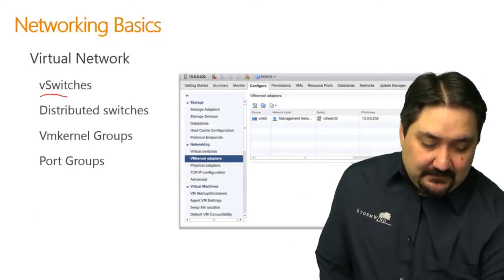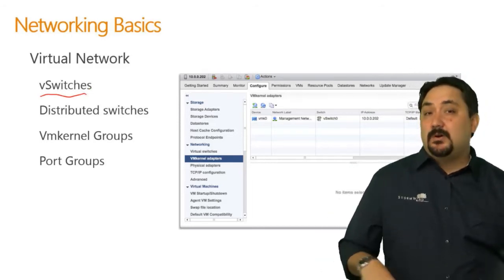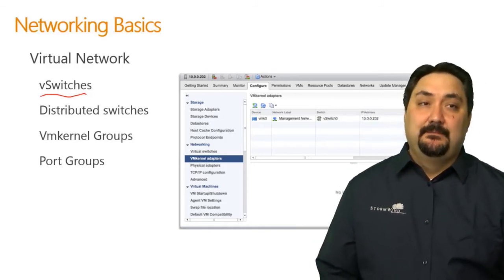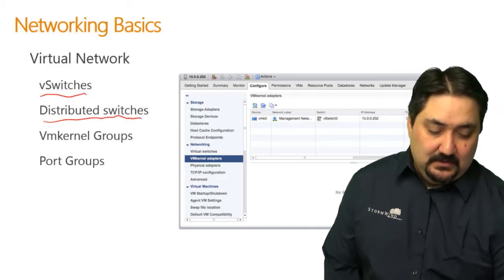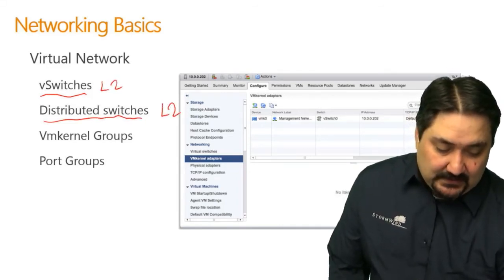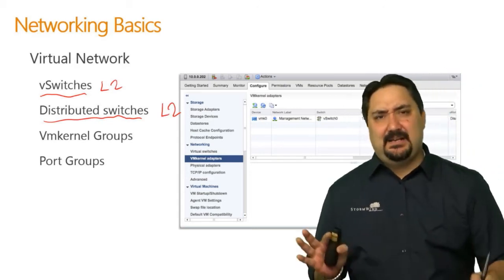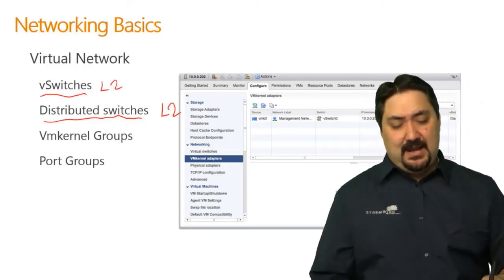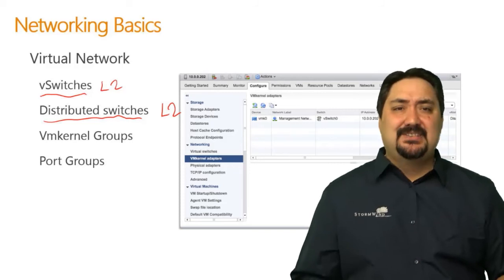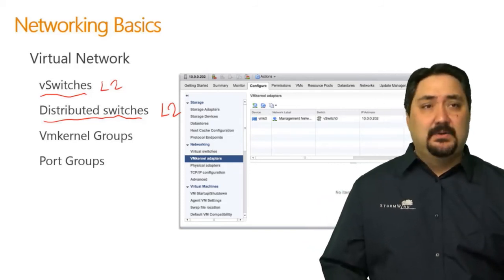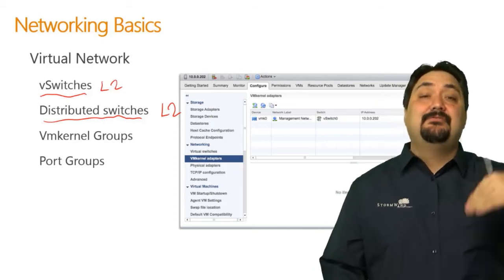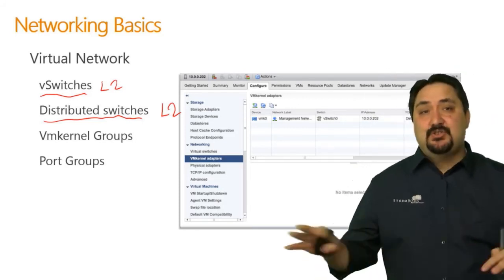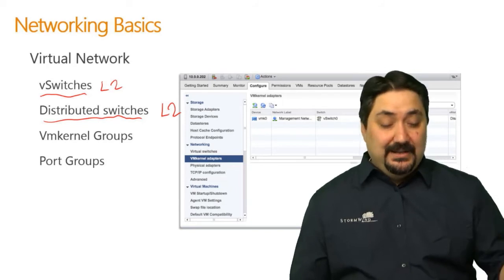Our virtual networking infrastructure starts with the basic vSwitch — the vSwitch is the workhorse of our virtual environments and allows connectivity to almost everything. We also have the distributed switch, which is also at layer 2. Someone described a distributed switch as a layer 3 switch — that is completely incorrect. It is a layer 2 switch with a lot of features.